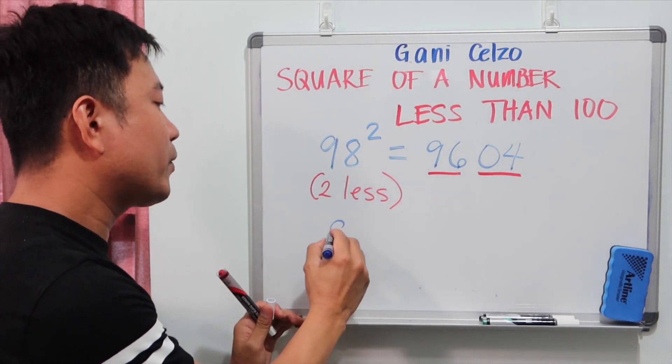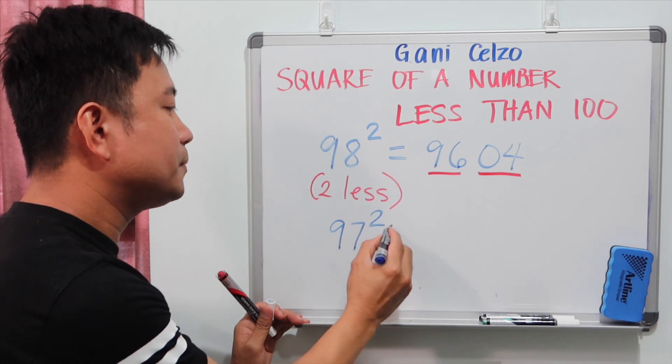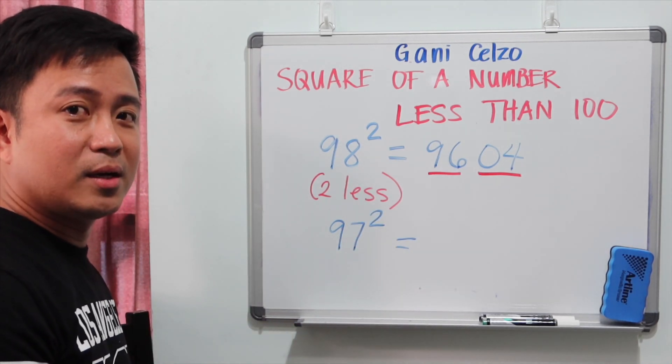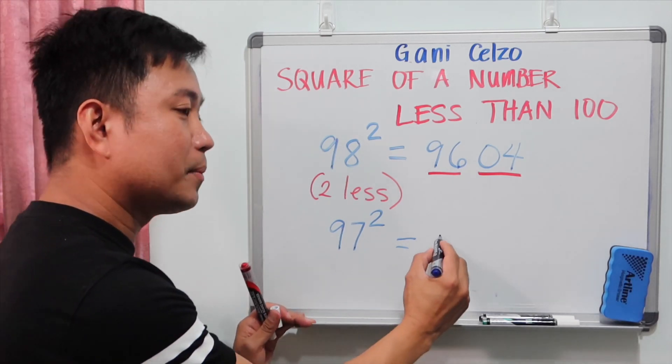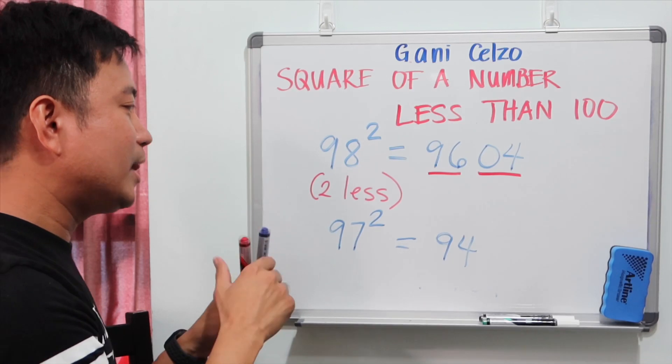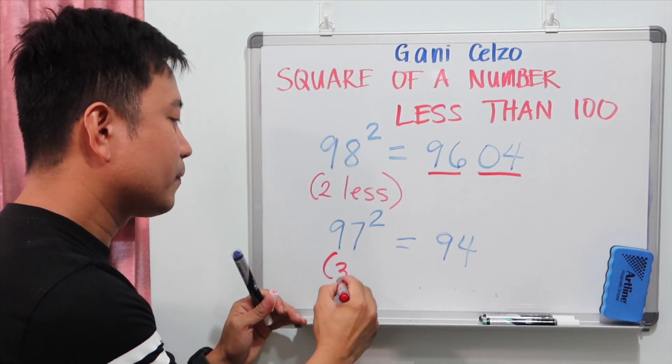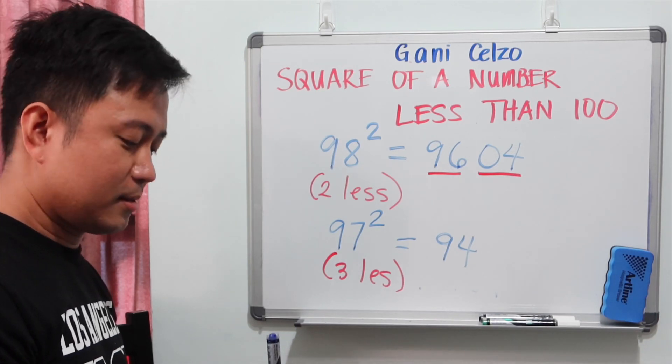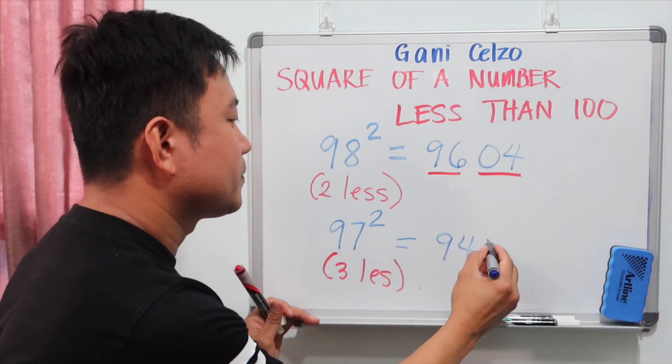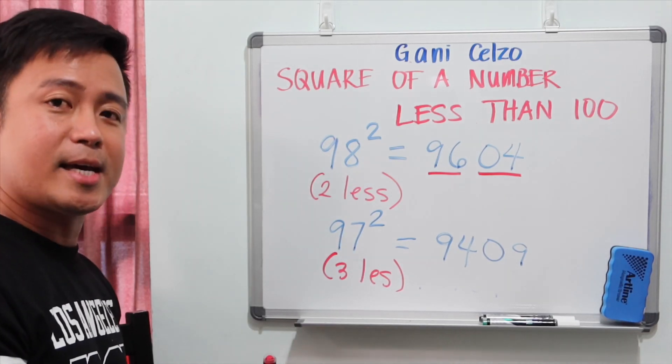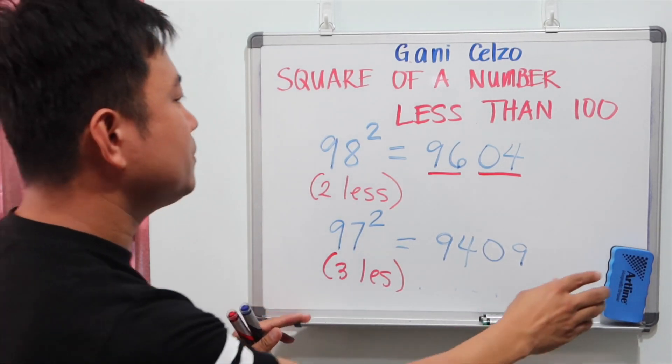So if you're squaring 97 square, that's 3 less than 100. So the first two numbers will be 94, because this is 3 less than 100. And the last two digits? 0,9. So 9,409. Okay, let's try more problems.